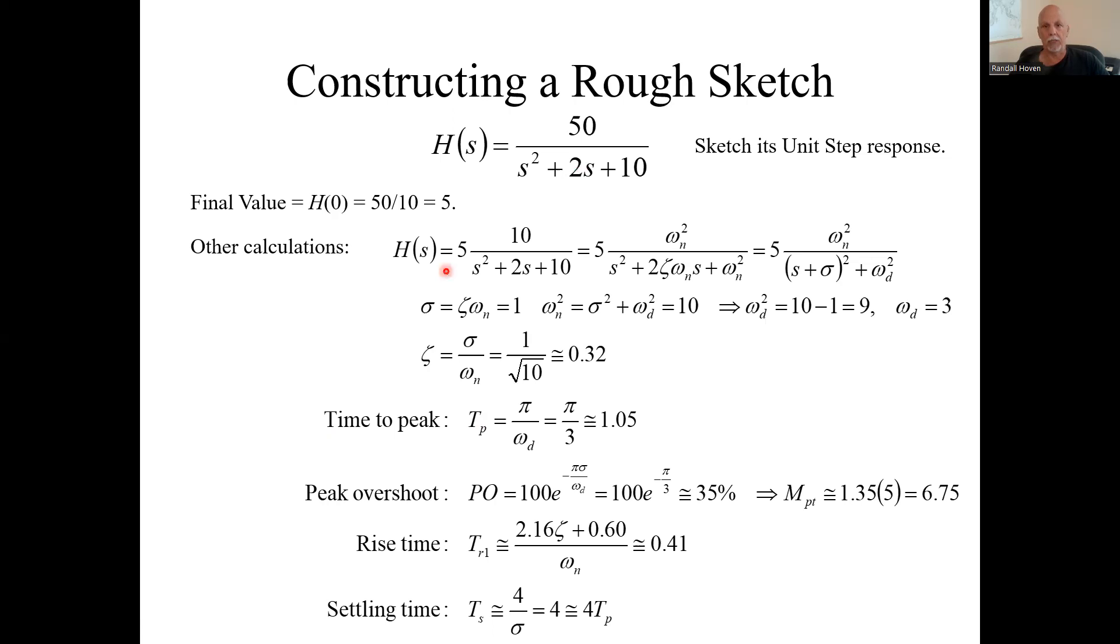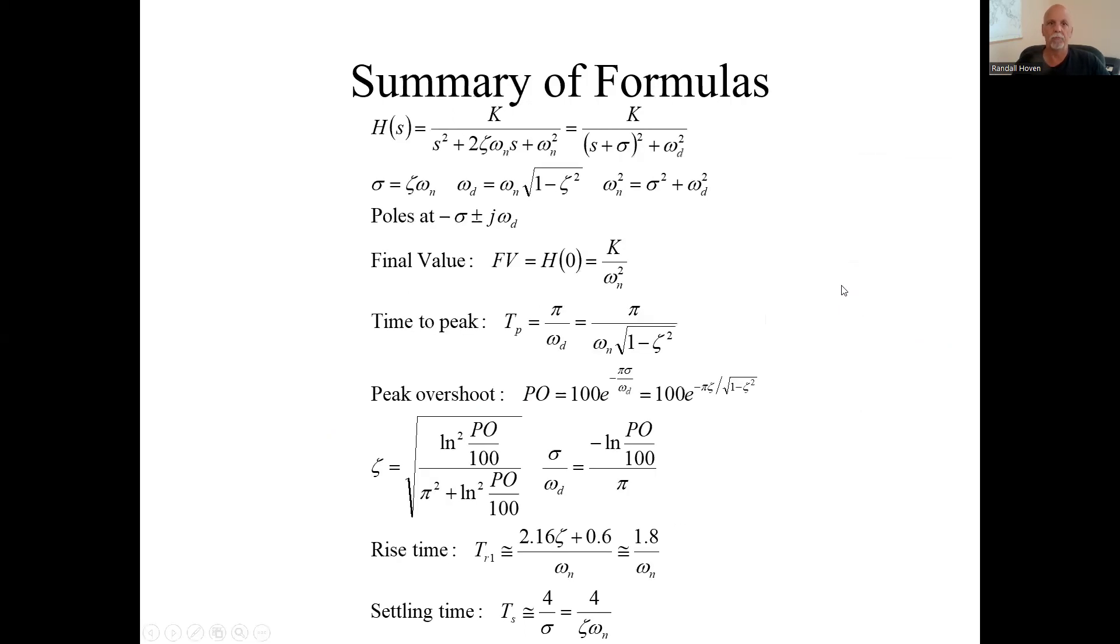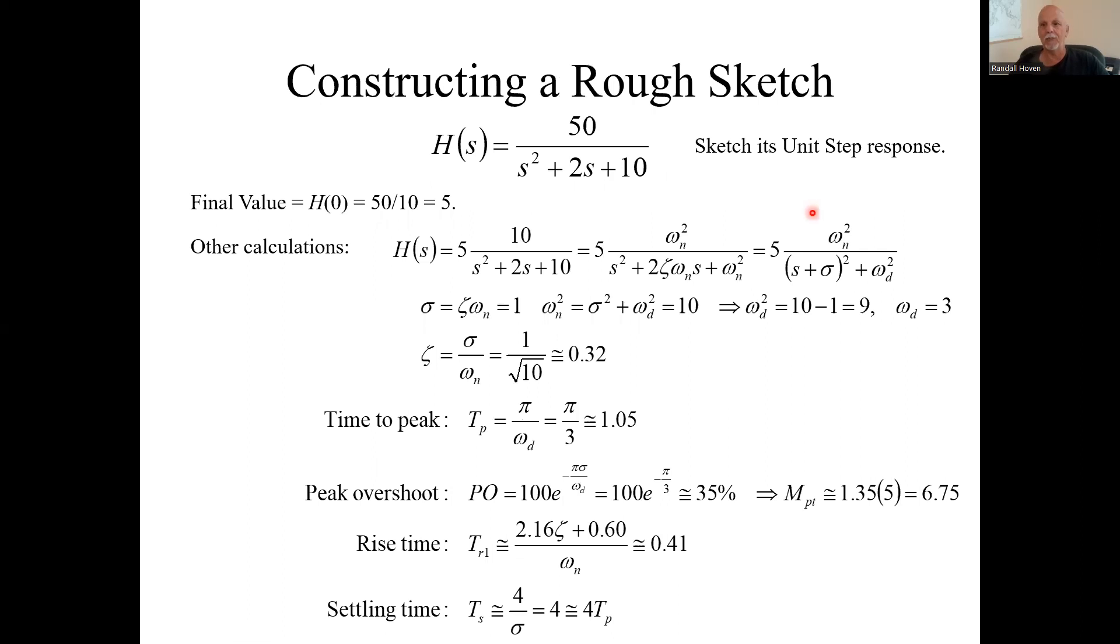Now, some other calculations. All these calculations here are basically relating the two different sets of parameters to each other: natural frequency and damping ratio versus the sigma and the omega sub d, damped frequency. And remember, these are where your poles are. Your poles are minus sigma plus or minus j omega d. So we like this format when we want to relate them to the pole location. Time to peak, we had a formula for that. It was pi over omega sub d. Now that we know what omega sub d is, it's pi over 3, which is a little bit over 1.